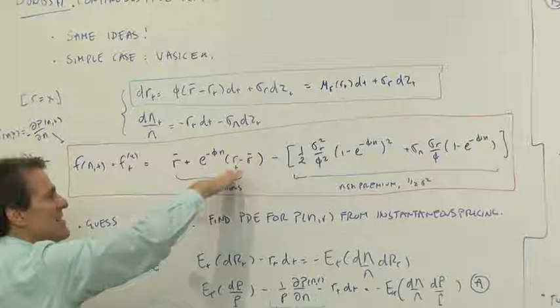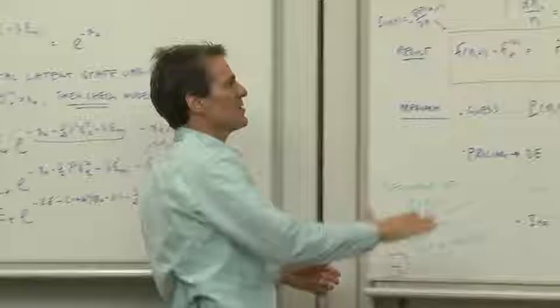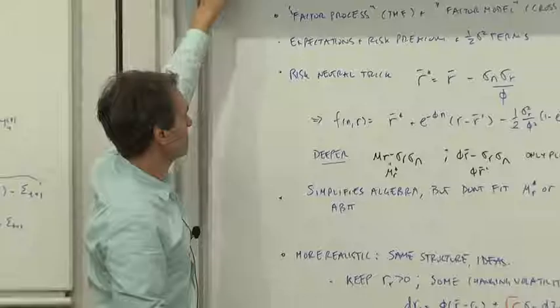A cross-sectional model that says, given where the factors are, where do all the other forward rates, where do the other bond prices go? So we have the cross-section and the time series modeled separately with risk premiums in there as well.